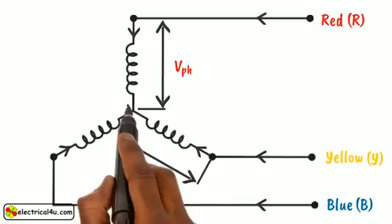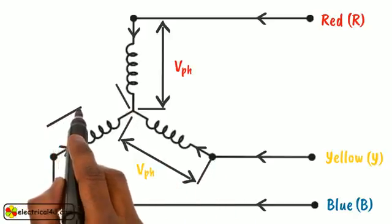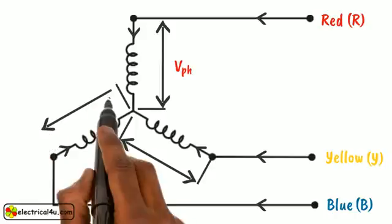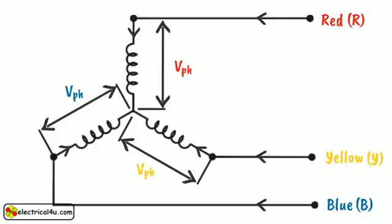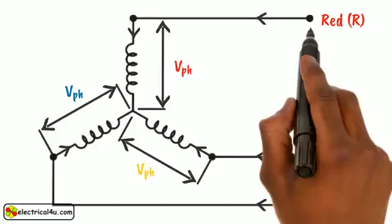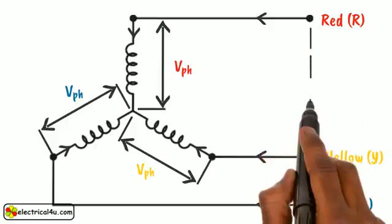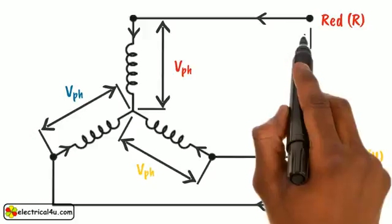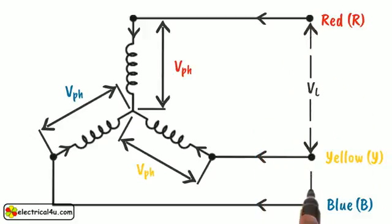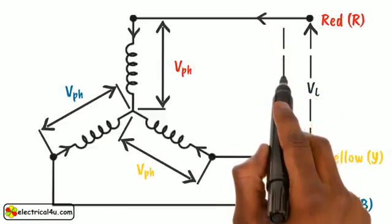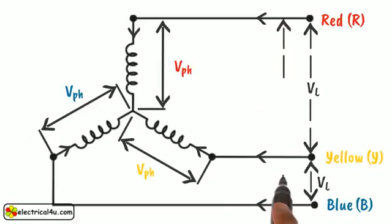Similarly, voltage across each phase is called phase voltage, VPH. Voltage across any two line conductors is called line voltage, VL.